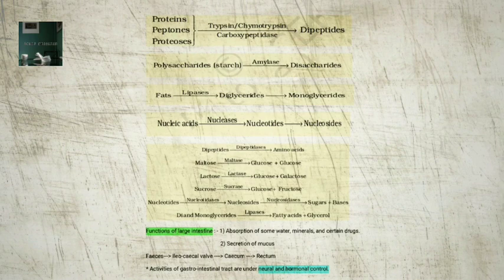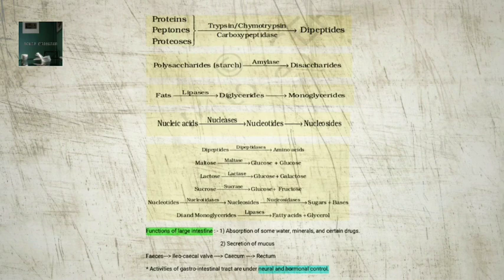The functions of the large intestine are: 1. Absorption of some water, minerals, and certain drugs. 2. Secretion of mucus. The undigested and unabsorbed substances called feces enter into the cecum through the ileocecal valve, which prevents the backflow of faecal matter. It is temporarily stored in the rectum till defecation. The activities of the gastrointestinal tract are under neural and hormonal control. Gastric and intestinal secretions are stimulated by neural signals. Hormonal control of secretion of digestive juices is by local hormones.